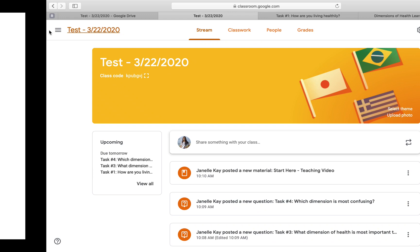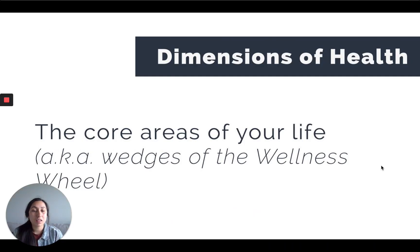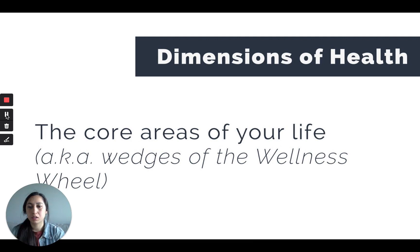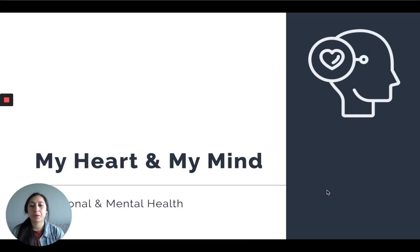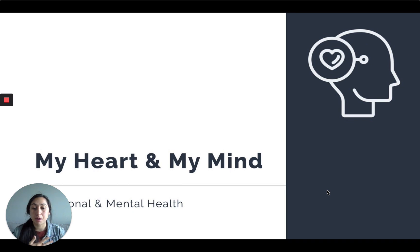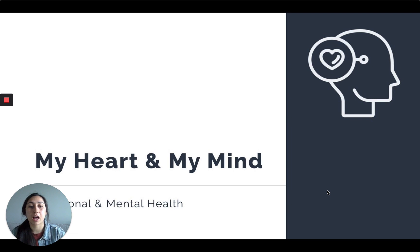Let's do a little recap. The dimensions of health are the core areas of our life. First, we have emotional and mental health — that refers to your mind, your ability to cope with life, manage your responsibilities, and deal with the struggles and challenges of everyday life.